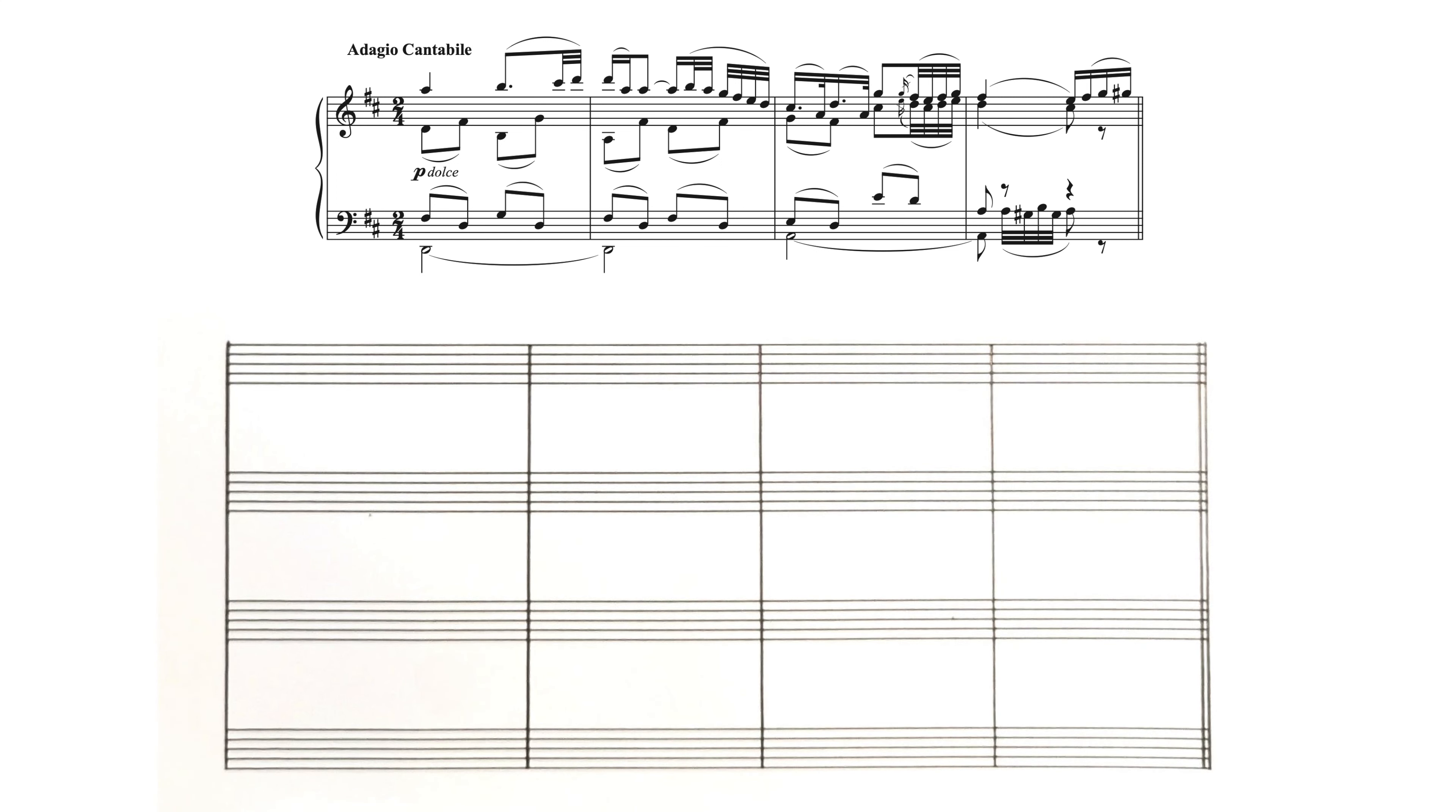Now the first thing you have to do is go grab a ruler and do your best to write the new bar lines directly underneath where they were in the original score. Now we're going to do this to help our eyes stay organized and not get lost.